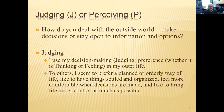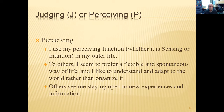Judging or perceiving describes how you deal with the outside world. Do you like to reach closure rapidly and have things planned or organized in advance? That's a judging preference. Or do you like to leave the options open and be more spontaneous and flexible, making decisions at the right time? That's perceiving. From this, you may get some sense of which pole you prefer for each of these attitudes and functions.